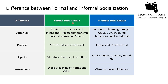What does it mean by formal and informal socialization? Formal socialization refers to a structured and intentional process that transmits societal norms and values. Formal, as its name implies, means that it must have some sort of formal setting within which an individual learns about norms, and it must have some sort of rules, regulations, and a regulated environment.